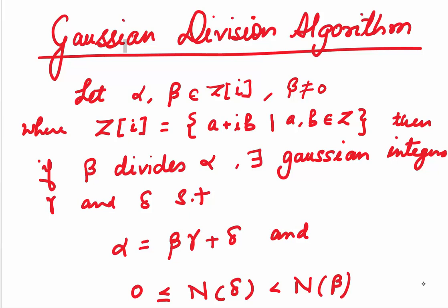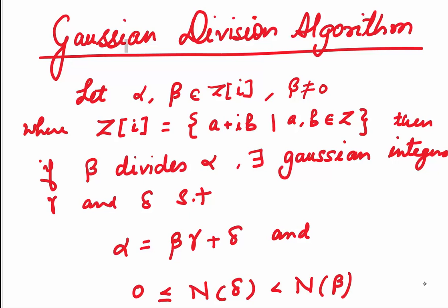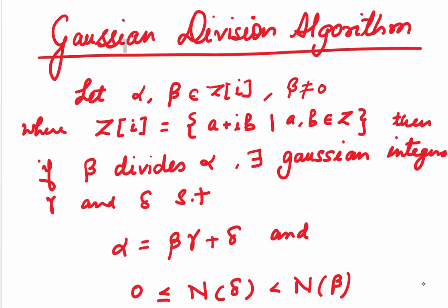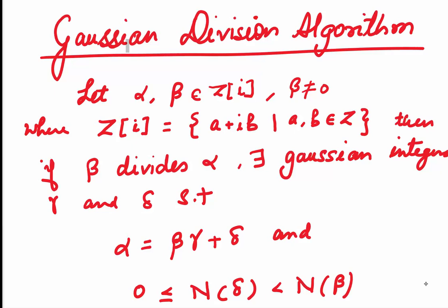Now let us see what the Gaussian division algorithm is. What if we are given two Gaussian integers alpha and beta such that beta is non-zero? Then, if beta divides alpha, there exist Gaussian integers gamma and delta such that alpha is equal to beta gamma plus delta, and the norm of delta is greater than or equal to 0 and less than the norm of beta.